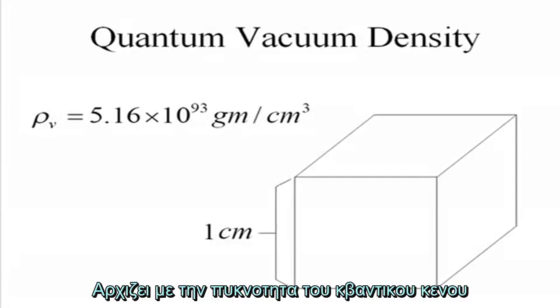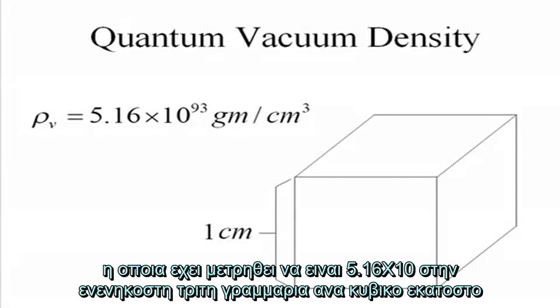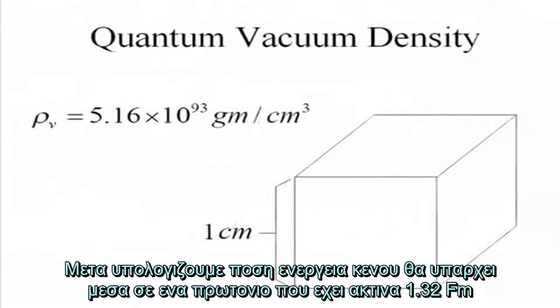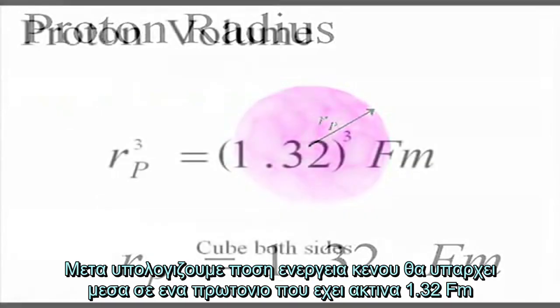It begins with the quantum vacuum density, which is a measured 5.16 times 10 to the 93rd grams per cubic centimeter. Then we calculate how much vacuum energy would exist inside of a proton, which has a radius of 1.32 femtometers.